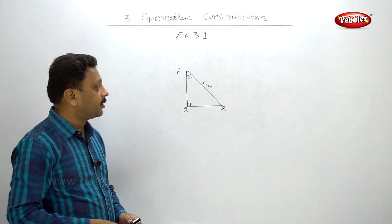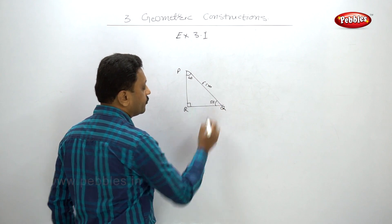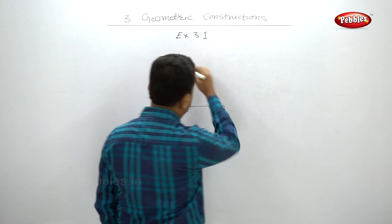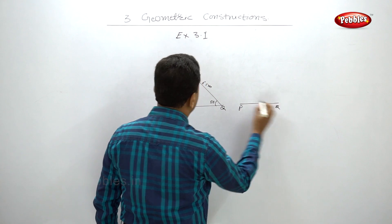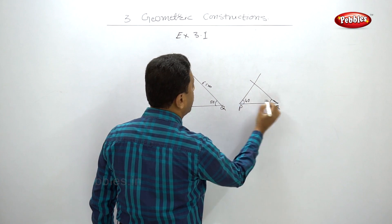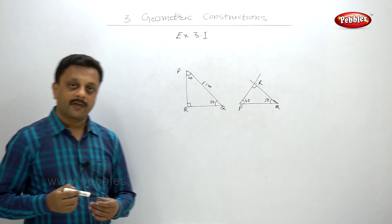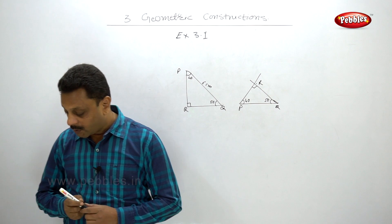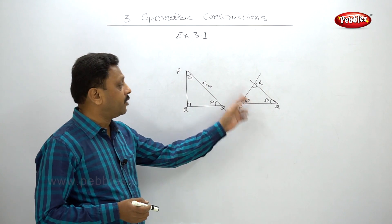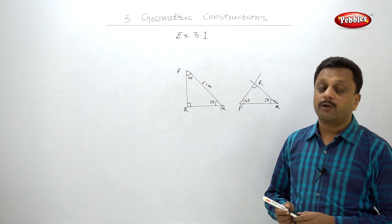Since angle P is 40 degrees and angle Q is 50 degrees, the point of intersection of those two rays is point R, which will be 90 degrees. To draw the circumcircle, draw the perpendicular bisector of any two sides; you will get the circumcenter, and the circumcircle will pass through all three vertices.